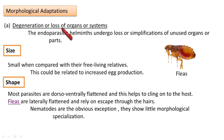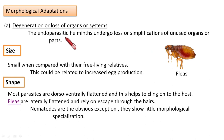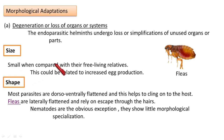Endoparasites lose or simplify their unused organs to support their parasitic mode of life. Regarding size, all endoparasites are very small when compared with their free-living relatives, and they also have a high rate of egg production. So size-wise, they are small.